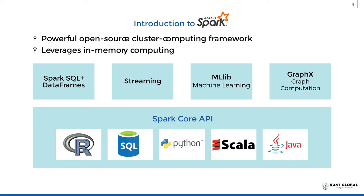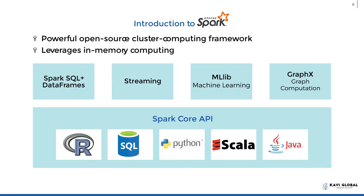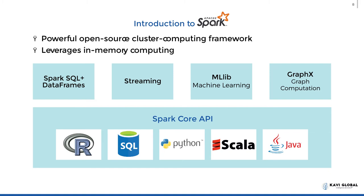Here you see the four blocks of Spark — the libraries that enable various functionalities. You have Spark SQL and DataFrames, wherein you can do traditional SQL-like database querying, altering tables, and reading and writing. Then there is streaming data, which is rapidly gaining prominence — Twitter feeds, stock market information, or web comments that come out regularly and at very rapid intervals. Spark provides a set of libraries to process this streaming data.